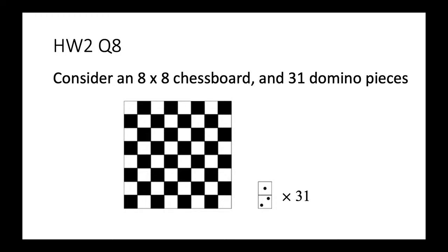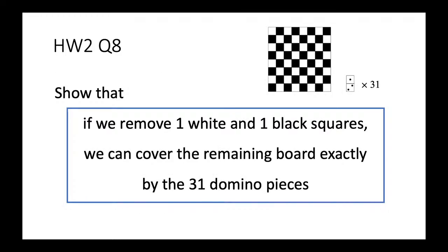For question number eight, we are given a standard eight-by-eight chessboard and only 31 domino pieces. We need to show that no matter how we remove one white square and one black square from the board, we can always cover the remaining 62 squares exactly with the 31 domino pieces, as long as the two removed squares are of different colors.